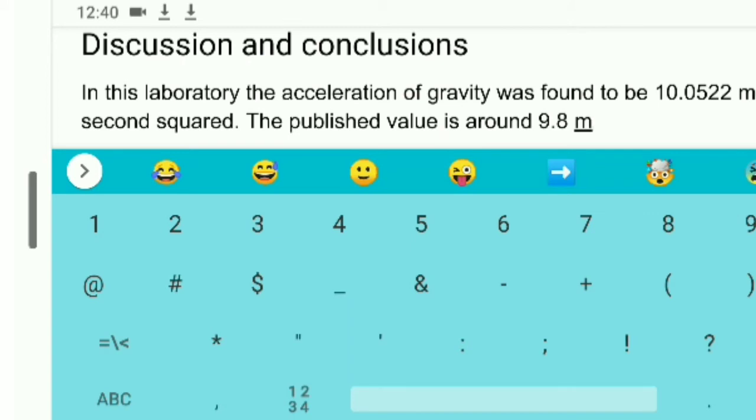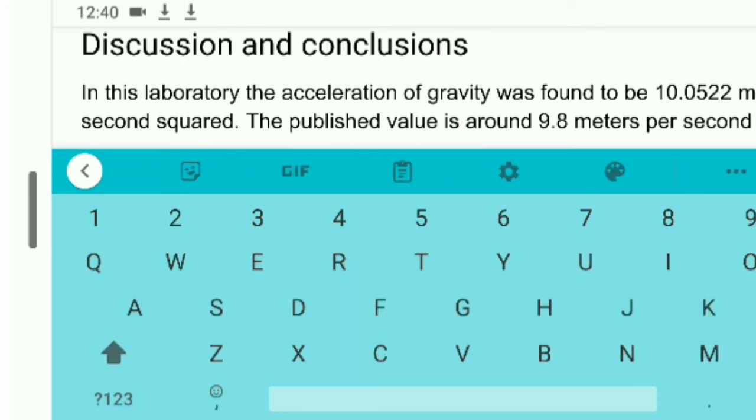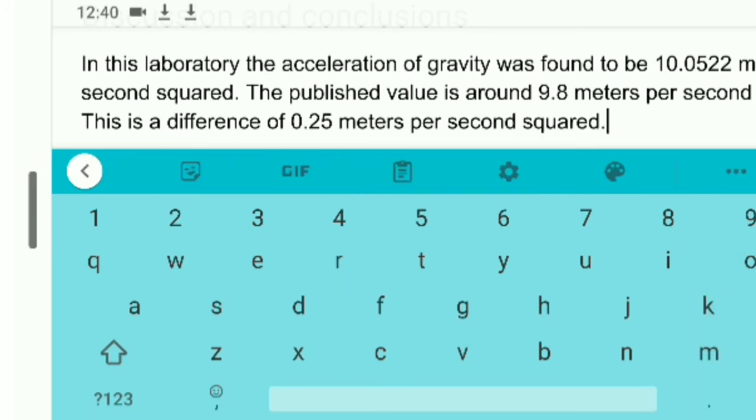The other thing to do is to give the reader a feel for how accurate that is. We can take our raw error, our 0.25 meters per second squared, and divide by 9.8 meters per second squared. That will give us the percentage error. A percentage error of less than 5% is excellent, and a percentage error of less than 10% is good. So the percentage error can help the reader understand how good your results are, how accurate your results have been.